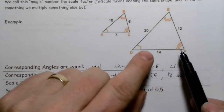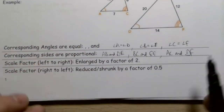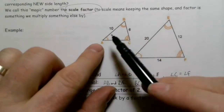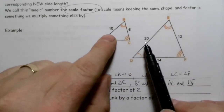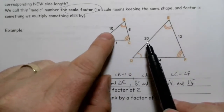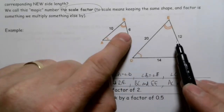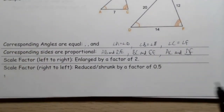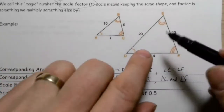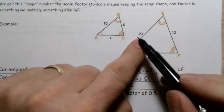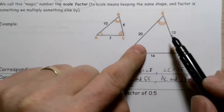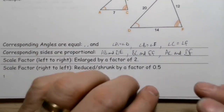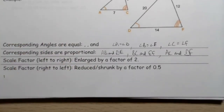The scale factor from left to right is enlarged by a factor of two — AB is proportional to DE and the new one is twice as big. Six times two is twelve, seven times two is fourteen, confirming the scale factor is two. Going the other direction, from right to left, twenty times one-half gives ten, twelve times one-half gives six, so the scale factor is 0.5.